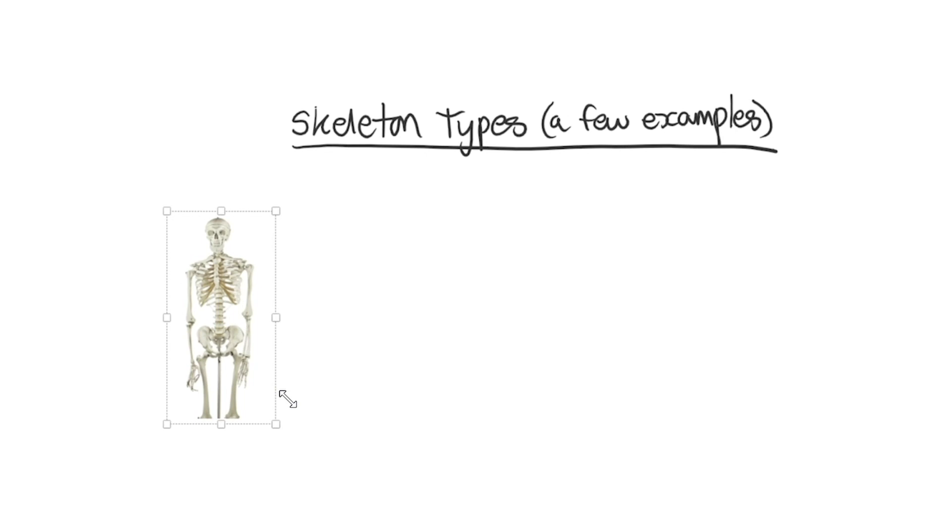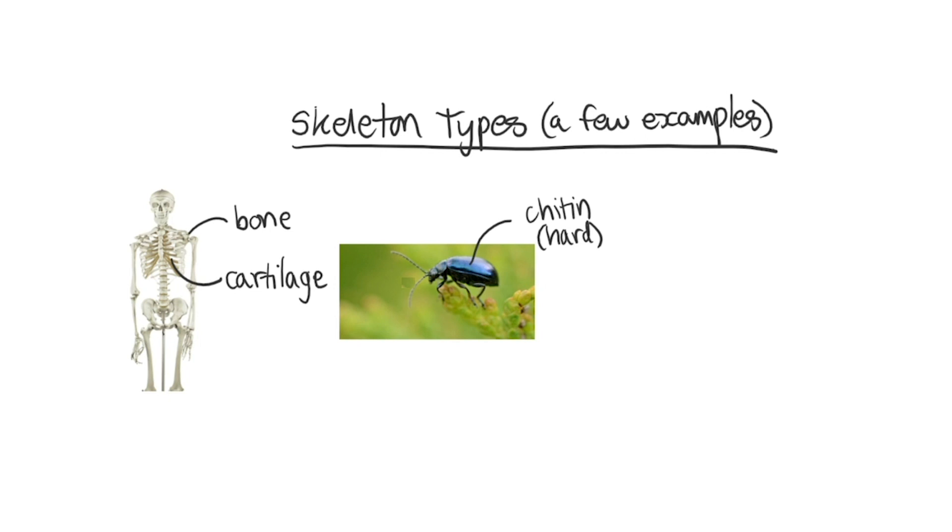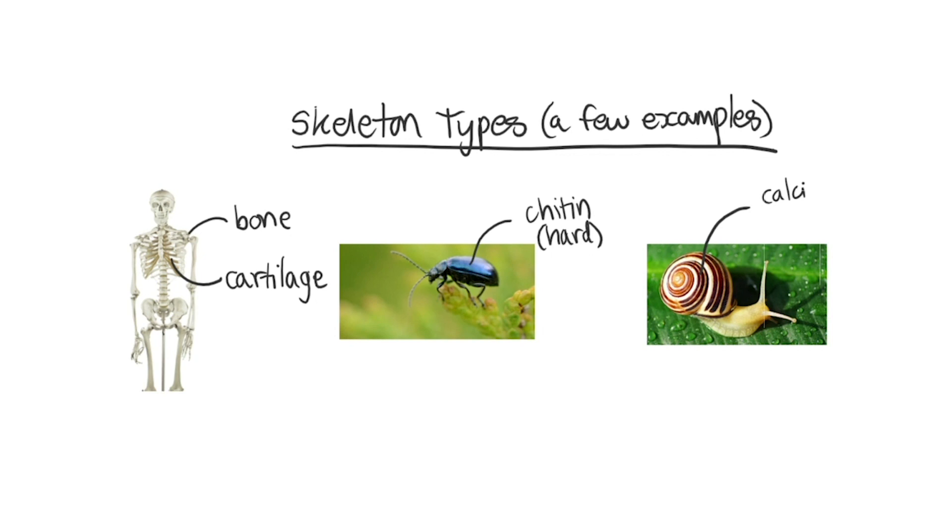Let's take a look at this insect. It has a hard skeleton like us but on the outside of the body and not made of cells. Instead, cells inside the insect make different molecules like chitin which provide functions similar to that of living bone. Similarly, animals like snails have cells that make calcium carbonate into a hard shell.